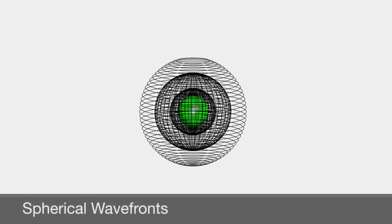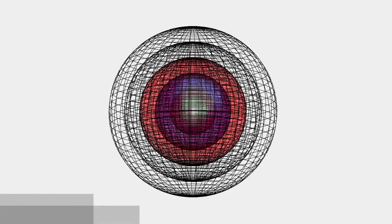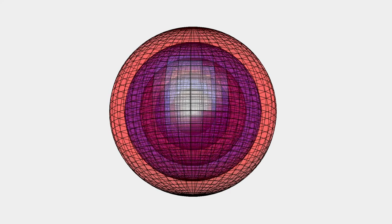We know that light waves travel as a waveform in all directions, so the light waves appear like spherical wavefronts. Waves travel like spherical wavefronts, as we can see in this animation. The red color wavefront represents the crest wavefront and the blue color wavefront represents the trough wavefront. In this way, crest and trough are formed successively.